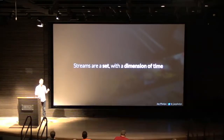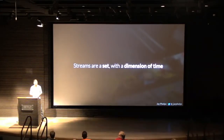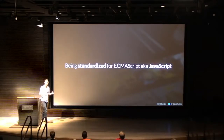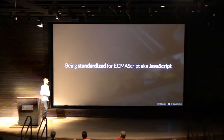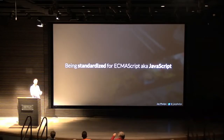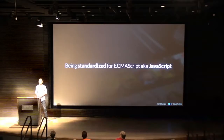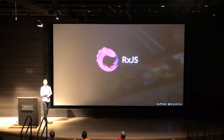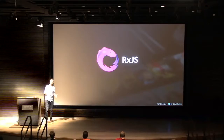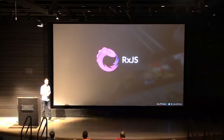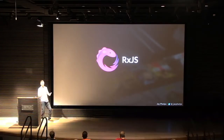Streams are a set with a dimension of time. They're actually being standardized right now, so they may land in the native browser without a library — just like promises went down the standards track, observables are going there too. They aren't in the browser today, so you use RxJS, which is a reference implementation of that specification. On top of that, it provides operators and factories for creating different types of observables. My colleague Ben Lesh likes to call it Lodash for async.